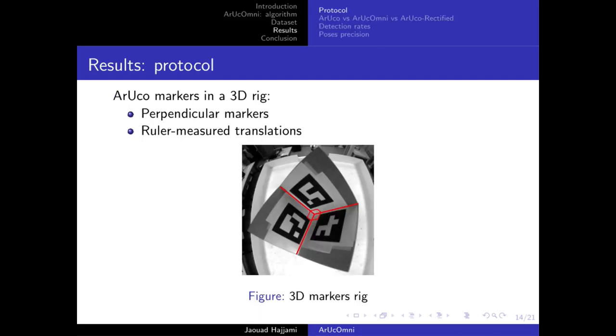This dataset captures a 3D markers rig which is made of three orthogonal planes as shown in this figure. The orientation between the markers is 90 degrees and the translation was manually measured.